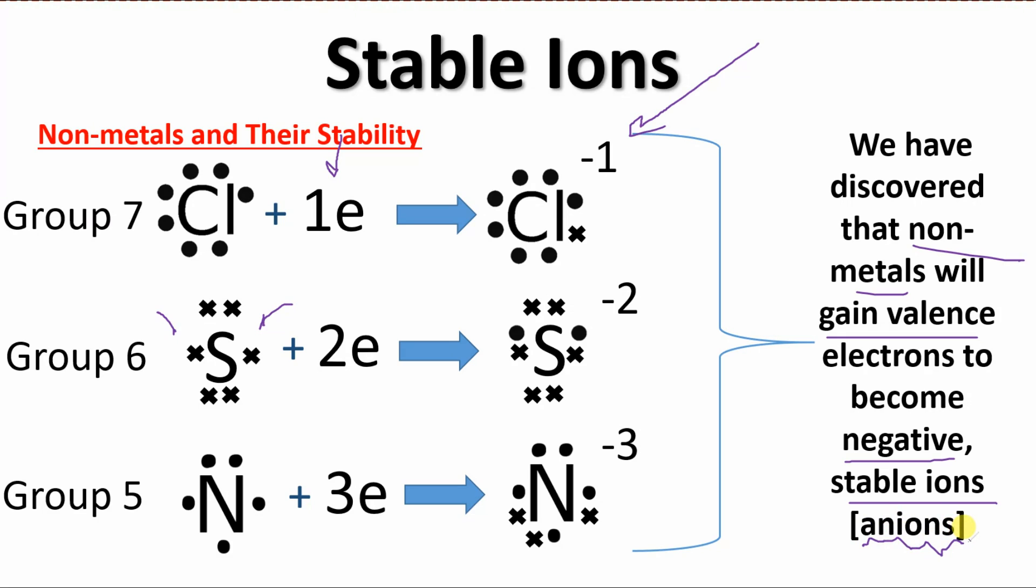We have discovered that non-metals are going to gain valence electrons to become stable negative ions or anions. So if you think about it, metals are losing, non-metals are gaining. So they're going to go together and make a nice match.